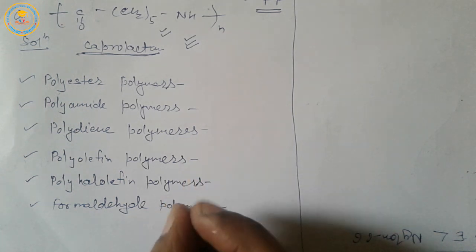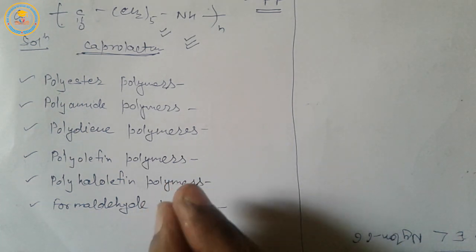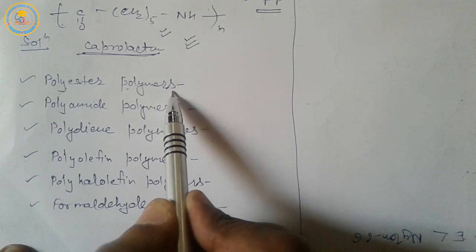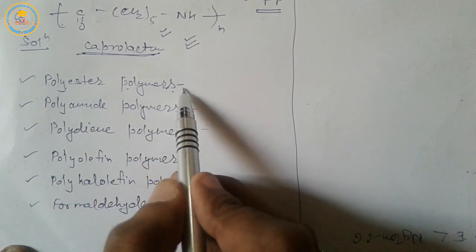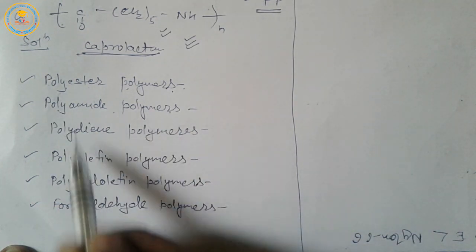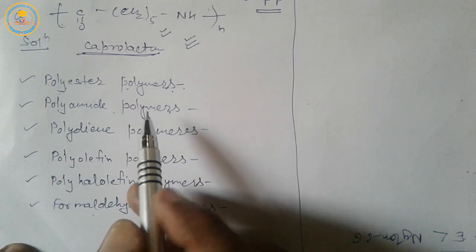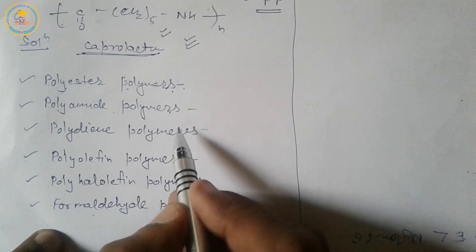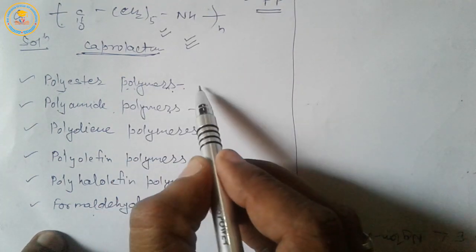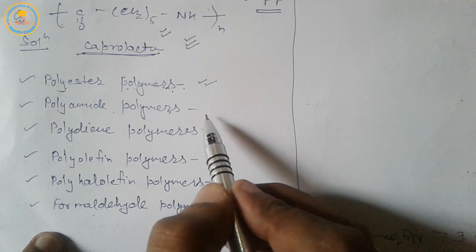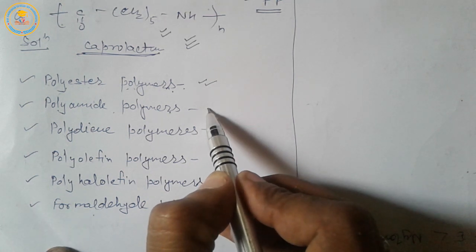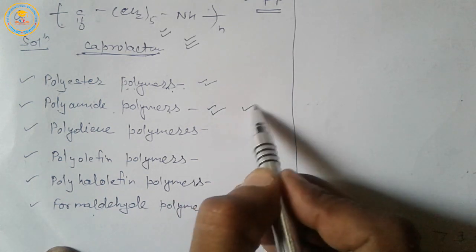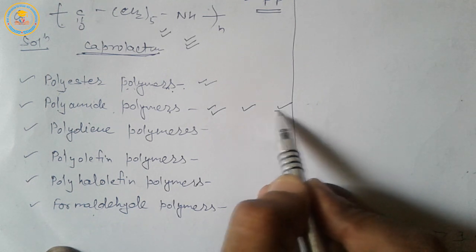Now we take some examples of important types of polymers. First are polyester polymers — examples include terylene or dacron. Next are polyamide polymers — Nylon 6,6, Nylon 6, and Nylon 2-Nylon 6.